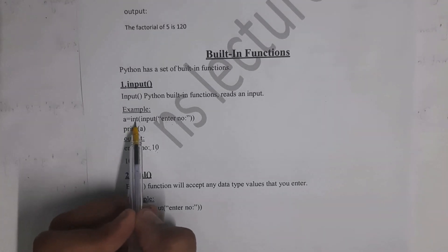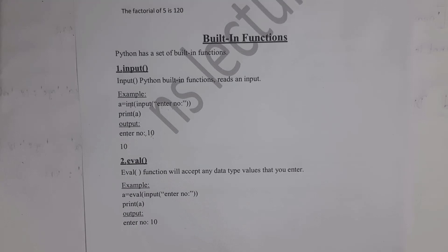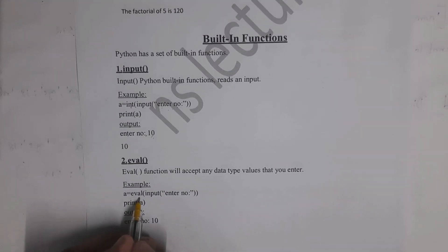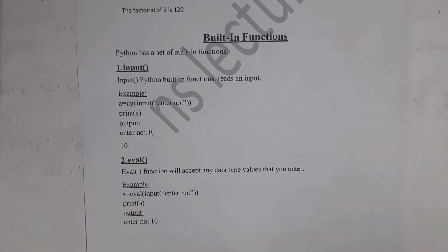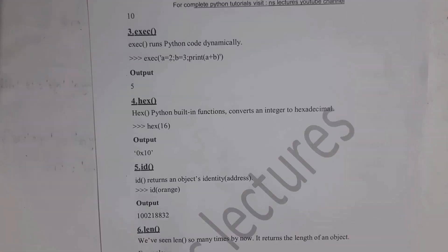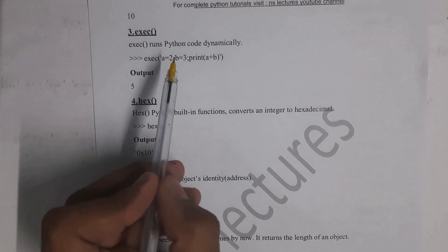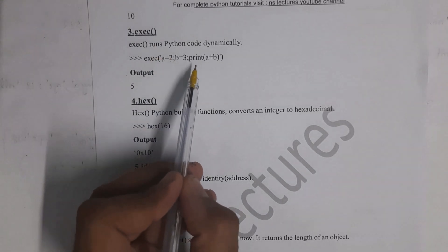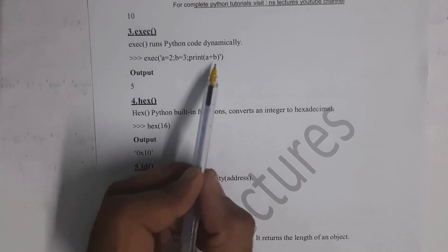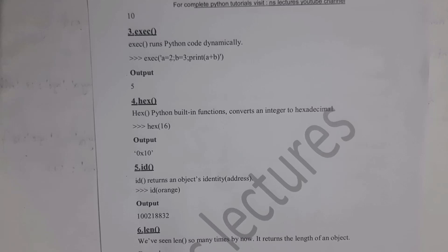Next is the eval function. In the previous example I gave type as int, so only integers could be entered. With eval, you can enter any value — integer, string, or float — and it will accept it. Next is the exec function, which stands for execute. For example, exec('a=2; b=3; print(a+b)') — writing entire code in single quotes — gives output 5.